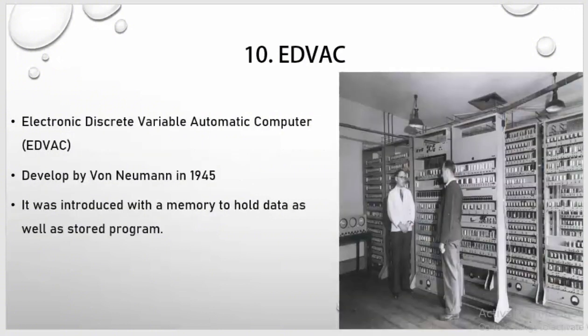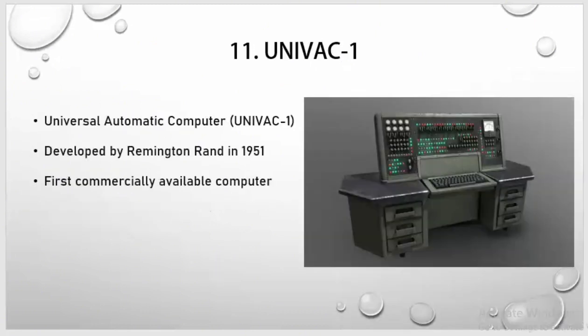Second last type is EDVAC. EDVAC stands for Electronic Discrete Variable Automatic Computer. It was developed by Von Neumann in 1945. It was introduced with a memory to hold data as well as a stored program.